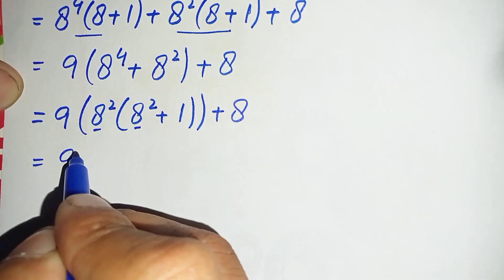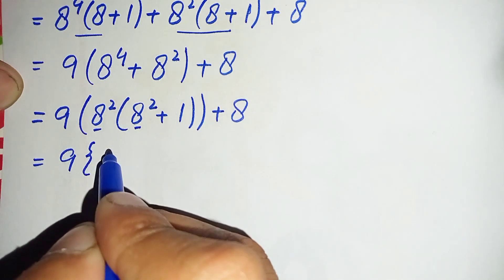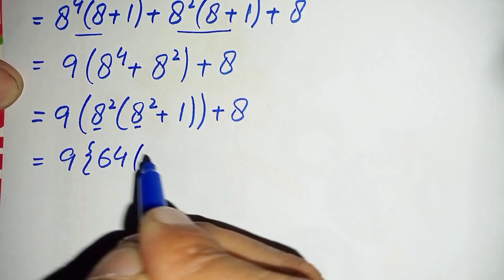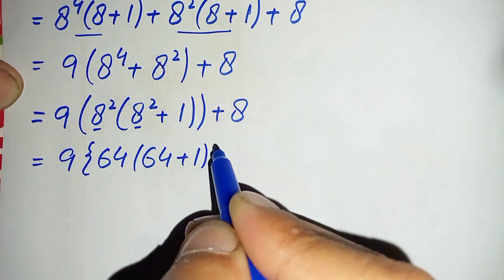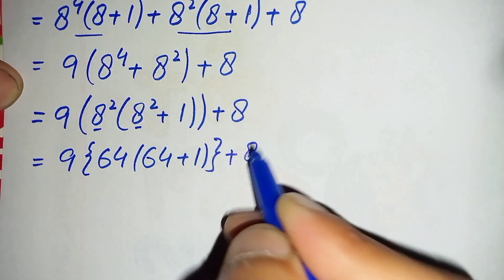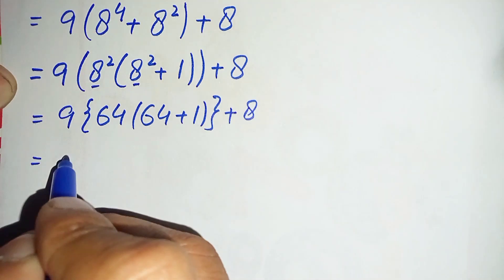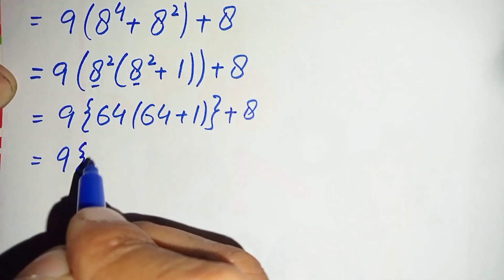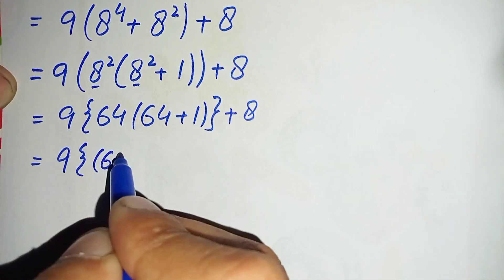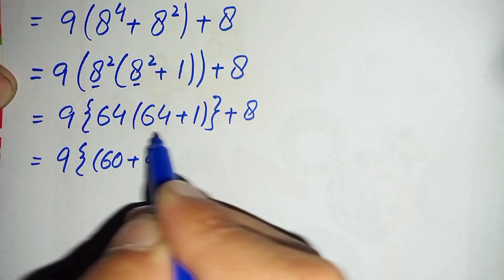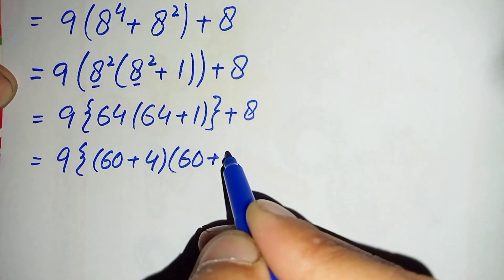Now we substitute values: 8 raised to power 2 is 64. So it becomes: 9 times 64 times (64 + 1) + 8, which is 9 times 64 times 65, plus 8. We can write 64 as 60+4 and 65 as 60+5.